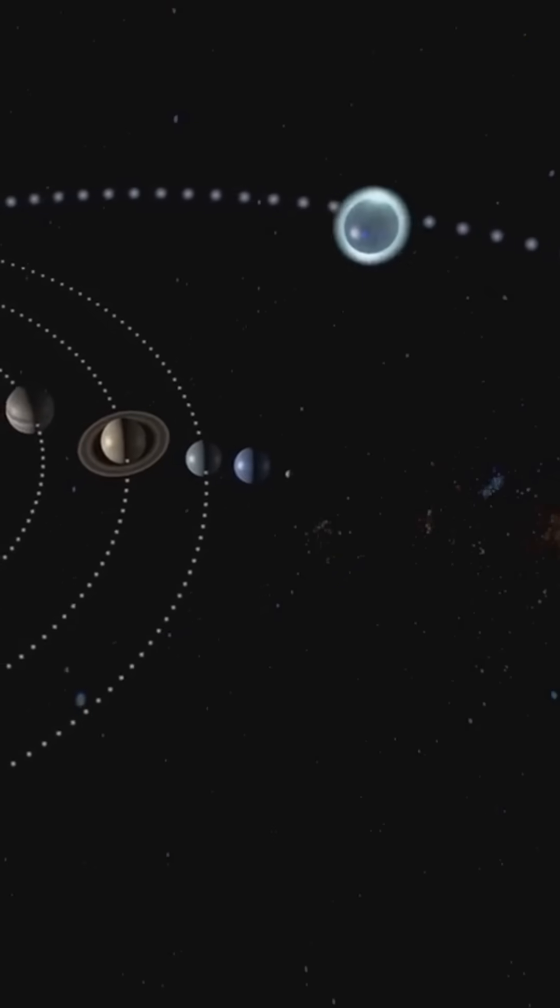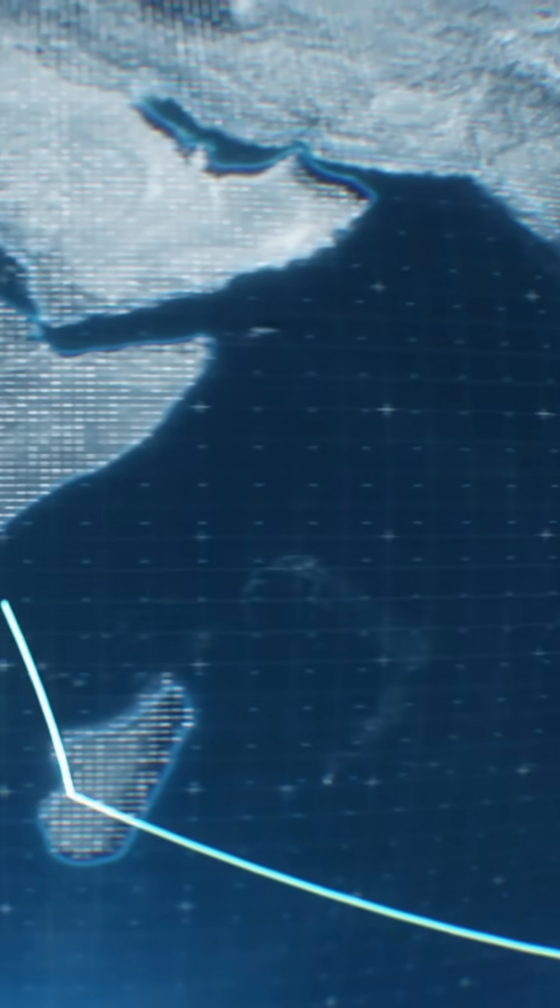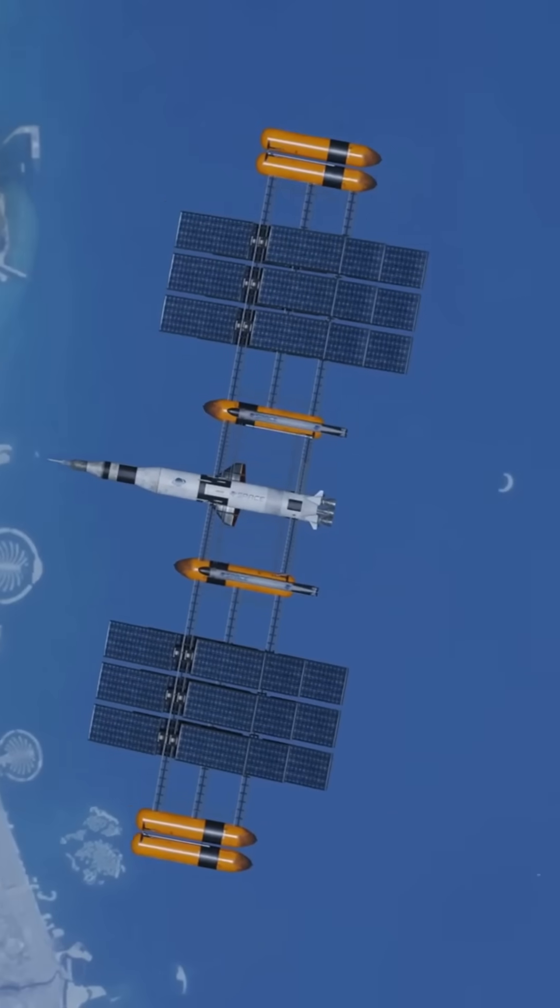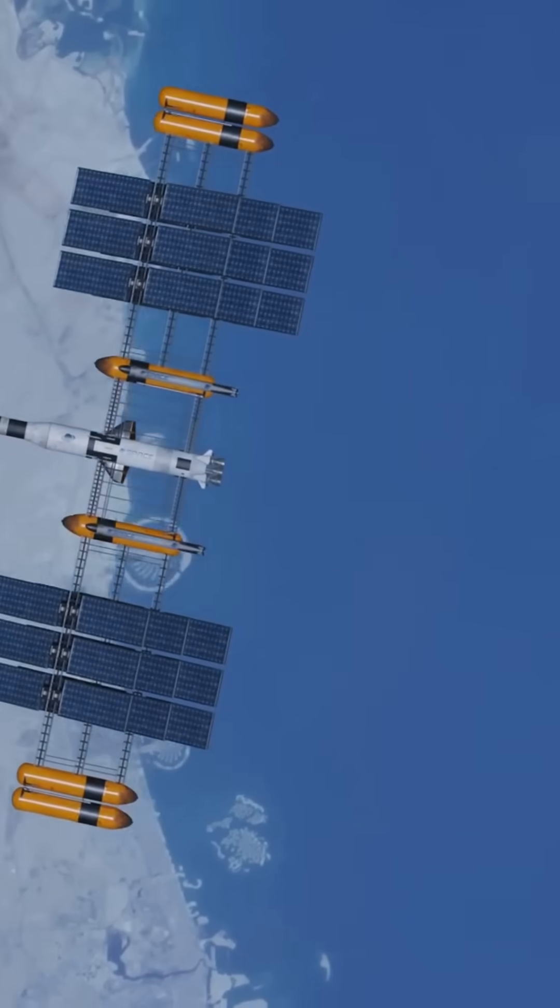Apogee is the point in an orbit where a satellite is farthest from the Earth. Think of it as the high point in its elliptical dance around the planet. For example, the apogee of a typical geostationary transfer orbit might be around 35,786 kilometers.